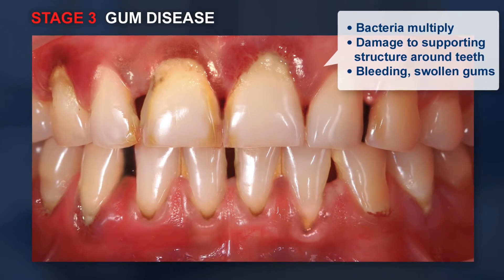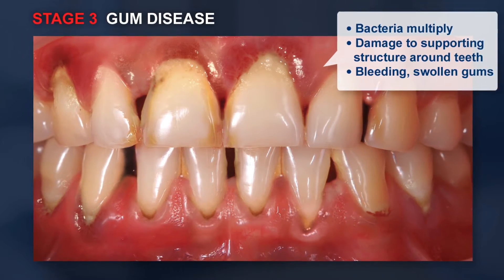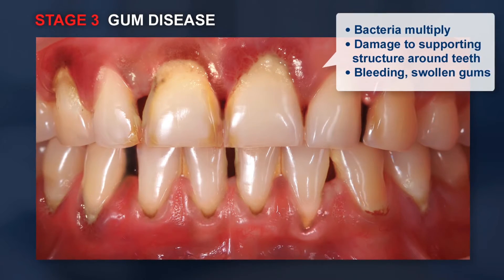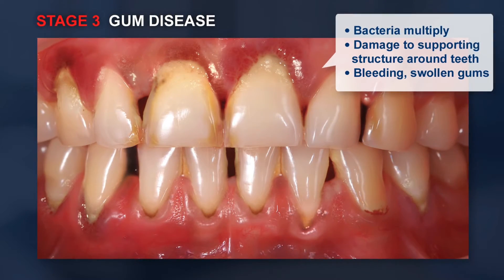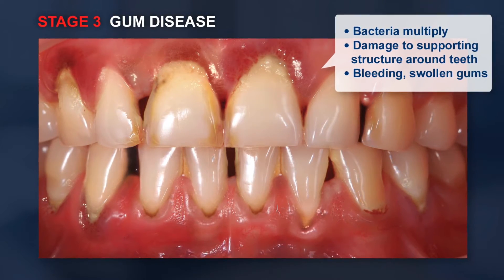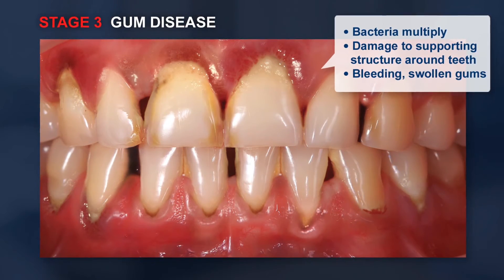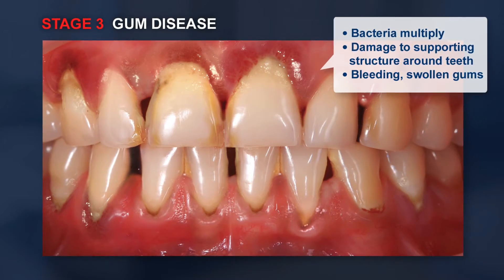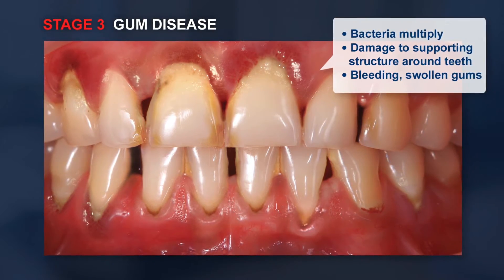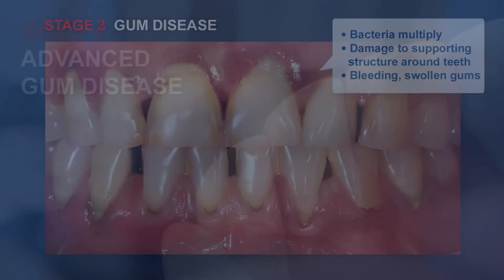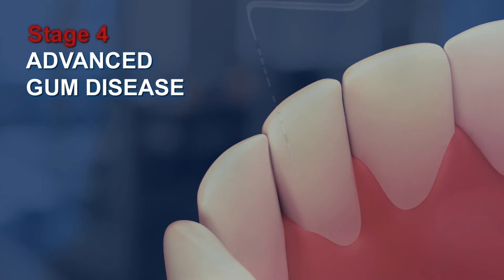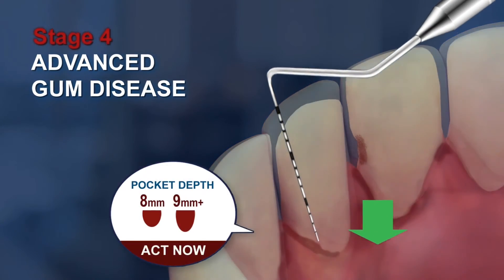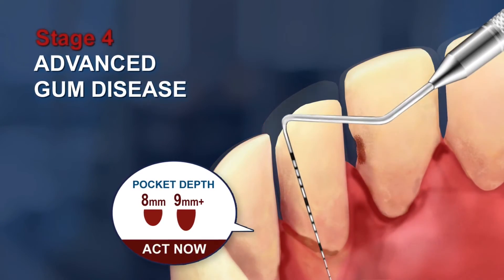Recommended treatments for stage 3 may include scaling and root planing, a type of deep cleaning that goes below the gum line where bacteria like to hide, and a locally delivered antibiotic such as Arrestin that will continue to fight the infection and allow the gum tissue to heal.